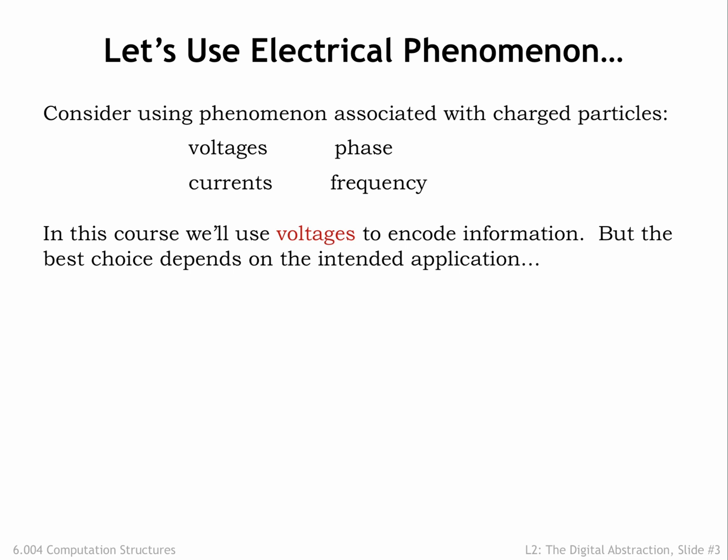We can also encode information using the phase and frequency of electromagnetic fields associated with charged particles. These latter two choices form the basis for wireless communication. Which electrical phenomenon is the best choice depends on the intended application. In this course, we'll use voltages to represent bits — for example, we might choose 0 volts to represent a 0 bit and 1 volt to represent a 1 bit.